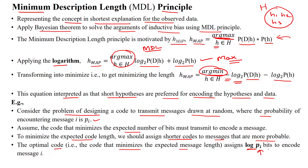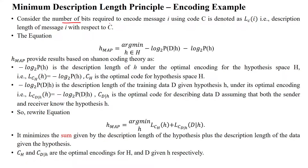The number of bits needed to encode message i using code C is denoted as LC(i), that is, the description length of message i with respect to code C. The MAP hypothesis minimizes the description length of the given data, expressed as: minus log base 2 of P(data | h) minus log base 2 of P(h). The MAP hypothesis result is based upon Shannon coding theory.